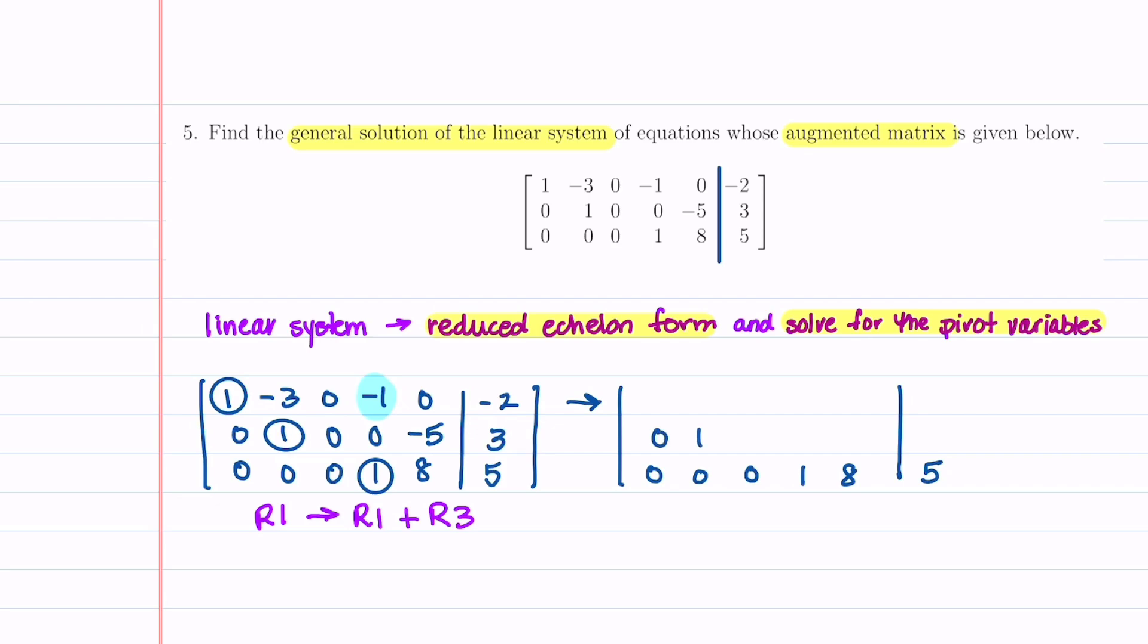That row doesn't change. Our second row also doesn't change. So we'll go ahead and write that down. And then it's our top row that's going to change. So we're going to take our bottom row, row three, and add it to our top row. And we're going to get one minus three, zero, zero. We're going to pick up an eight. And then five minus two gives us a three.